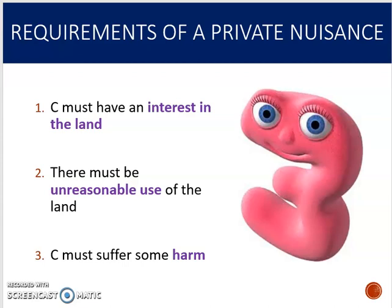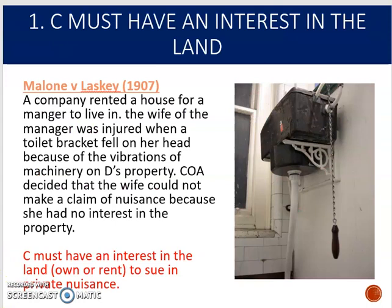There are three requirements to prove private nuisance. Firstly, the claimant must have an interest in the land. Secondly, they have to prove there was an unreasonable use of the land. And thirdly, the claimant must suffer some harm. We're going to look at each of these requirements in turn with the cases that help to explain them.